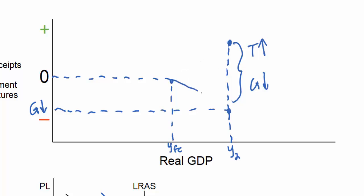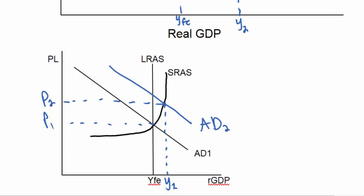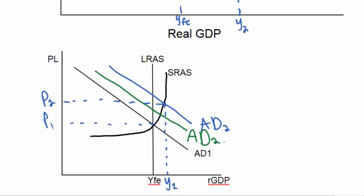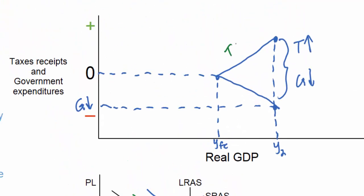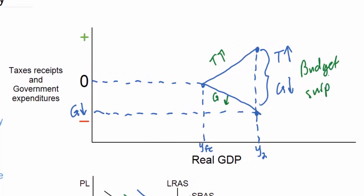In this way, automatic stabilizers will counteract any inflationary impact of an increase in aggregate demand beyond the full employment level. The result should be disinflation, or at least a decrease in the inflation rate, as a result of the counter-cyclical automatic stabilizers. On the graph, we can see that tax revenues increase and government spending decreases during a period of expansion, and the result should be a budget surplus, assuming the country began at a balanced budget when it was at full employment.